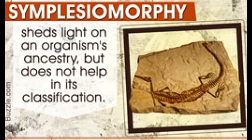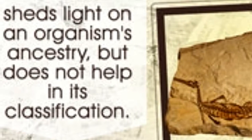A symplesiomorphy is a property shown by different groups of organisms as a result of a common ancestry between them. The ancestor who evolved this trait is a primitive, rather than a recent one. Thus, symplesiomorphies can be described as shared and primitive characters, rather than a derived character evolved only in a recent ancestor.